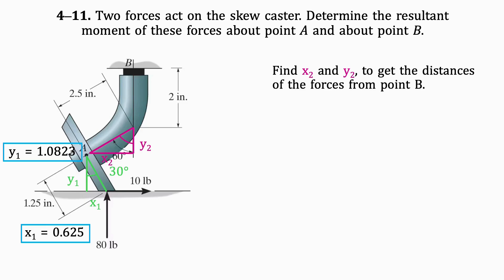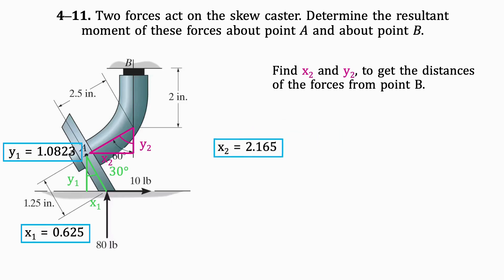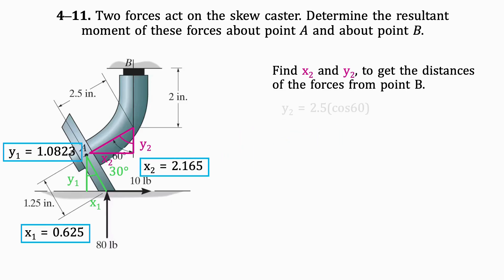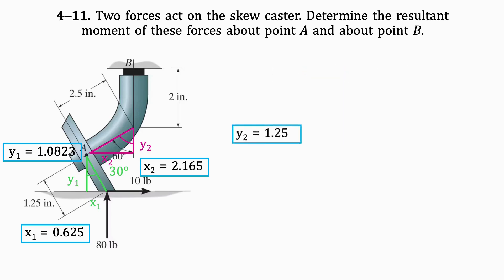Let's find x2 first. x2 is 2.5 times sine 60, which results in 2.165 inches. Next, we'll find y2. y2 is 2.5 times cosine 60, which results in 1.25 inches.